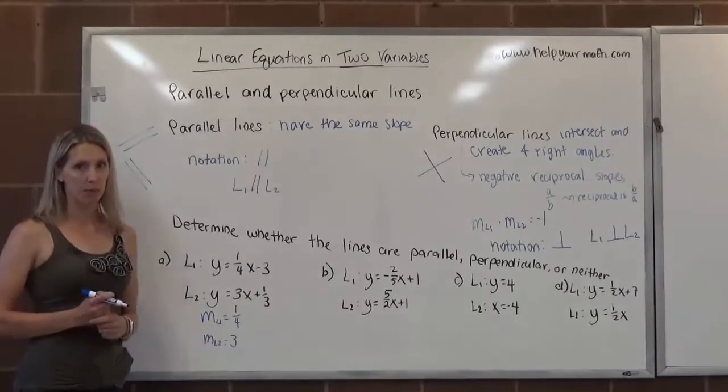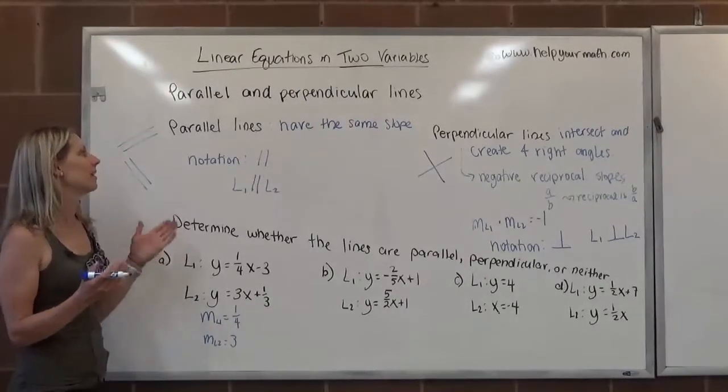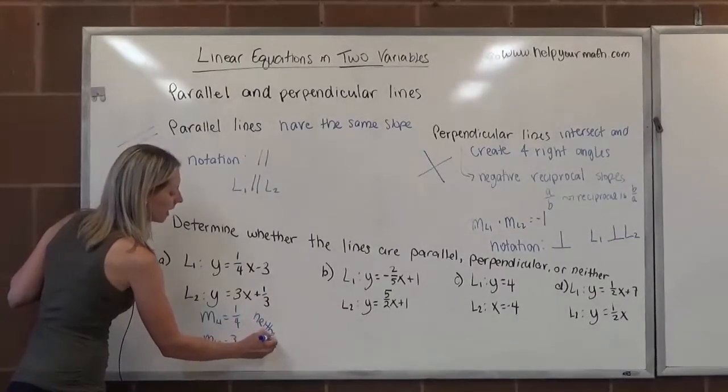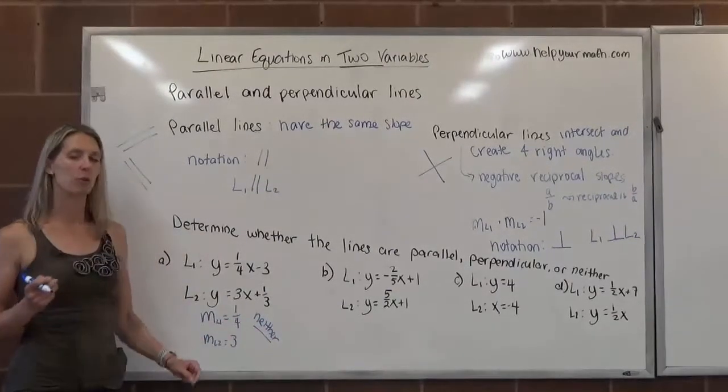They're also not negative reciprocals of each other. That means they are neither parallel nor perpendicular. So these are just ordinary, boring, intersecting lines. They're neither parallel nor perpendicular.